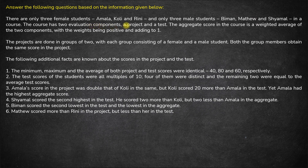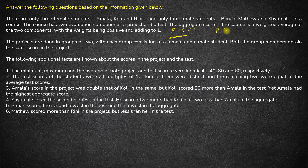The course has two evaluation components: a project and a test. The aggregate score in the course is the weighted average of these two components, with the weights being positive and adding to one. So project will have some weight P and the test will have some weight T, so P plus T equals one, and both P and T are greater than zero — basically both will be less than one but greater than zero, some number between zero and one.